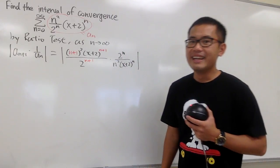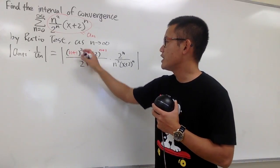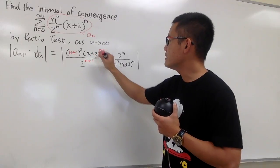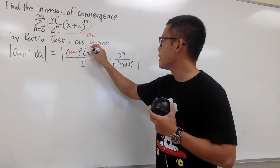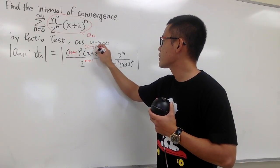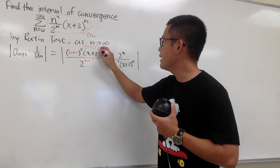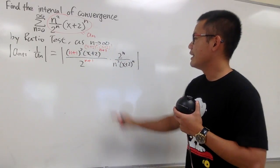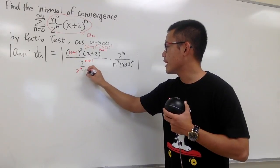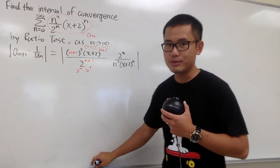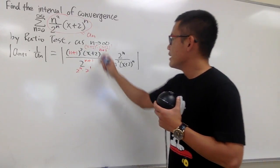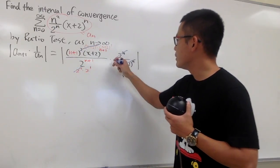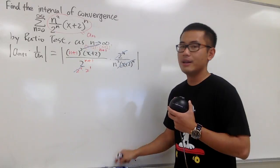So this is the usual deal. I'll keep the (n+1)² part as is, but for the (x+2) terms I can write it as (x+2)^n times (x+2)^1, and this is the same as 2^n times 2^1. Then (x+2)^n cancels out with that, and 2^n cancels with 2^n as well.